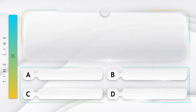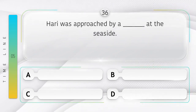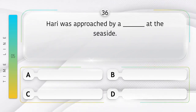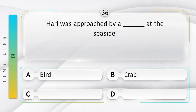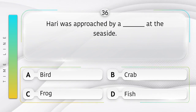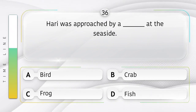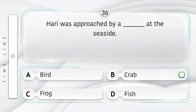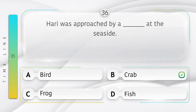Lunch. Hari was approached by a ______ at the seaside. Option is A. Bird. B. Crab. C. Frog. D. Fish. Answer is option B.